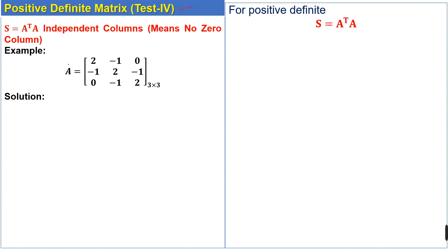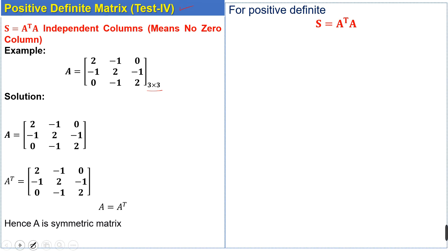We have an example where the given matrix is of order 3×3. First we check the symmetry of the matrix — whether it is symmetric or not. To check symmetry we take the transpose and compare both matrices. We can see that the transpose of matrix A is equal to matrix A, meaning the given matrix is symmetric.